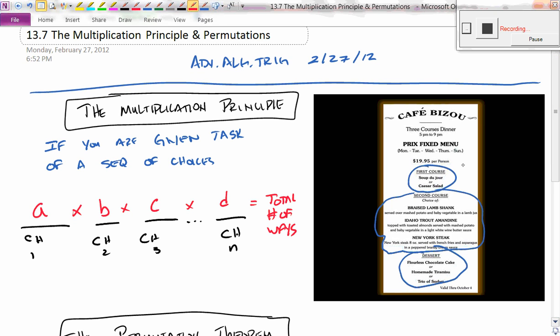Well, the first choice there's two options. The second choice there's three options. And then for the third choice, there's also three options. So the grand total number of meals that can be made is just two times three times three, which is 18. And that is an application of the multiplication principle.